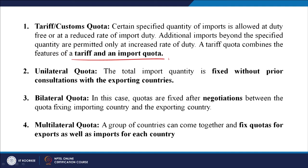A unilateral quota is where the total import quantity is fixed without prior consultations with the exporting countries — we fix it from our own side. In a bilateral quota, quotas are fixed after negotiation between the quota-fixing importing country and the exporting country. A multilateral quota is where a group of countries come together and fix quotas for exports as well as imports for each country, according to the condition of each country.